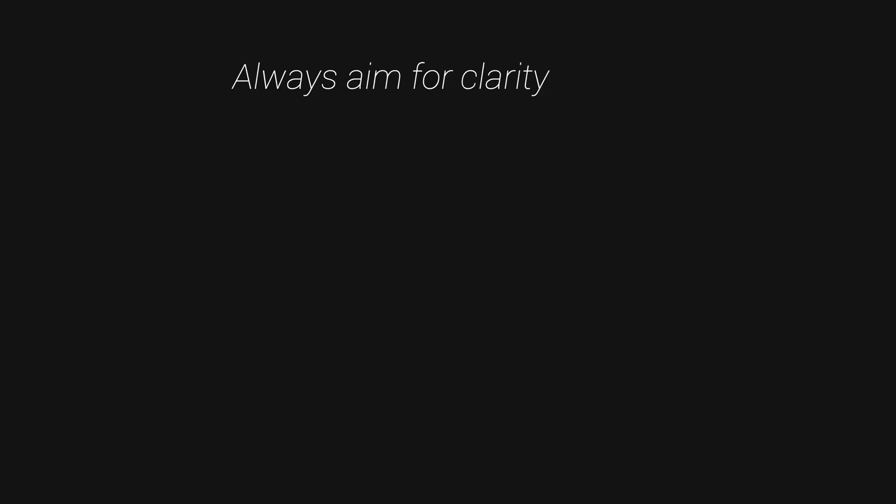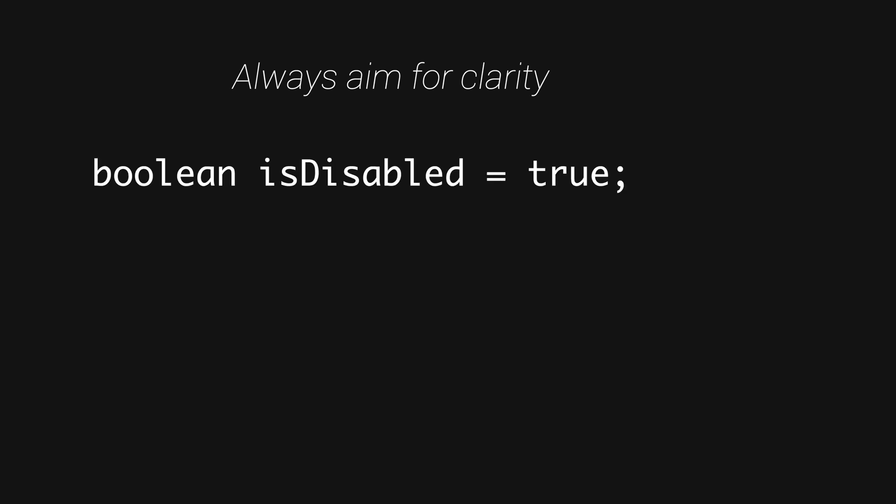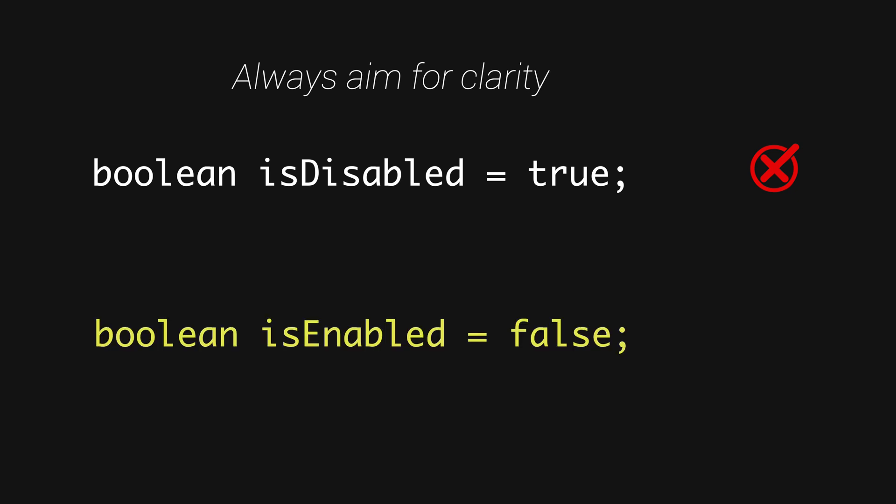Avoid contradictory or negated variable names. We're all guilty of this — we name boolean variables as negations. Rather than defining 'isDisabled' and checking true/false, use 'isEnabled' instead, because our brains are wired to think positively. If you define 'isDisabled = false', you now have to mentally negate everything to understand the actual state. Using 'isEnabled = true' is far more intuitive. Always try to use positive variable names rather than negated ones.